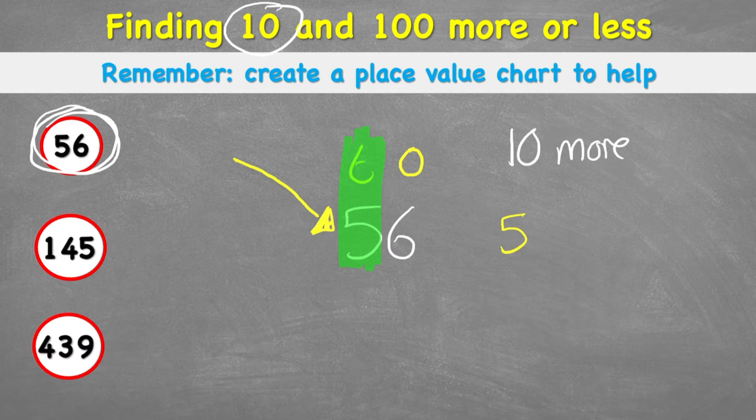At the moment, there's a 5. So if I want to go 1 more, I would go to 6. That's adding 10 to my number, 1 ten to my number. But I've done nothing to my units or my ones. So therefore, I can bring this other 6 down. And my answer to 10 more than 56 is 66.